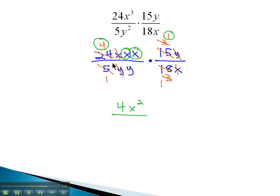Over, in the denominator, 1, y, and 1 leaves just y, or 1y. And we get our final answer, 4x² over y.